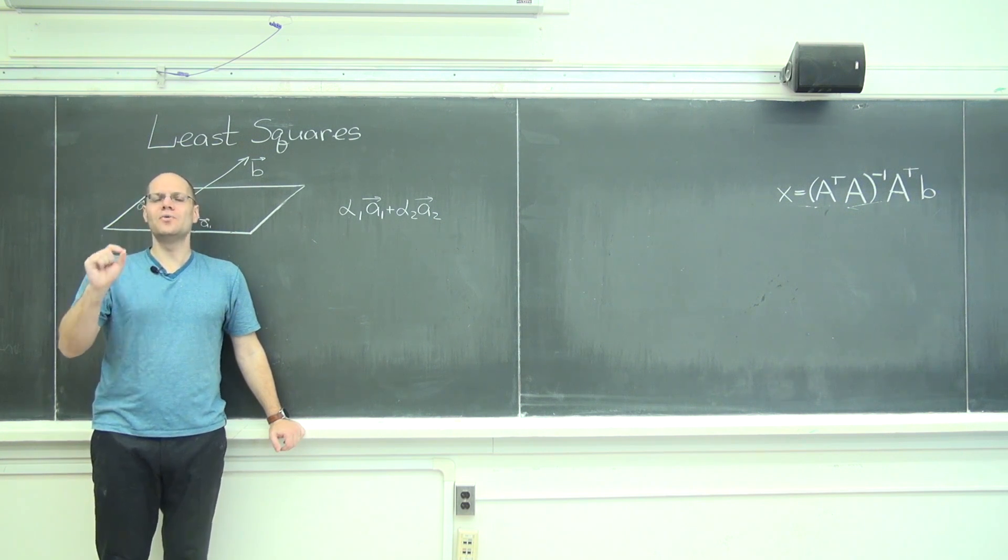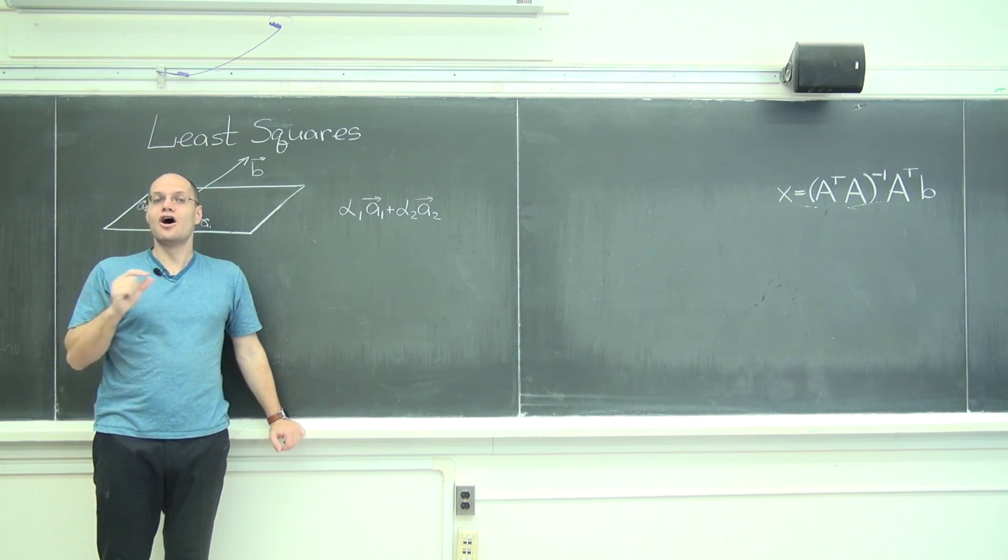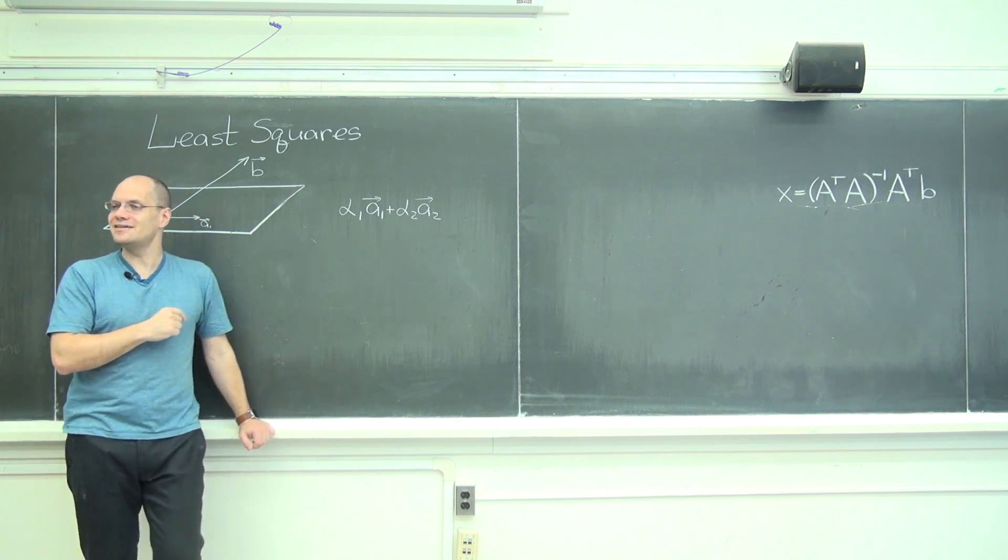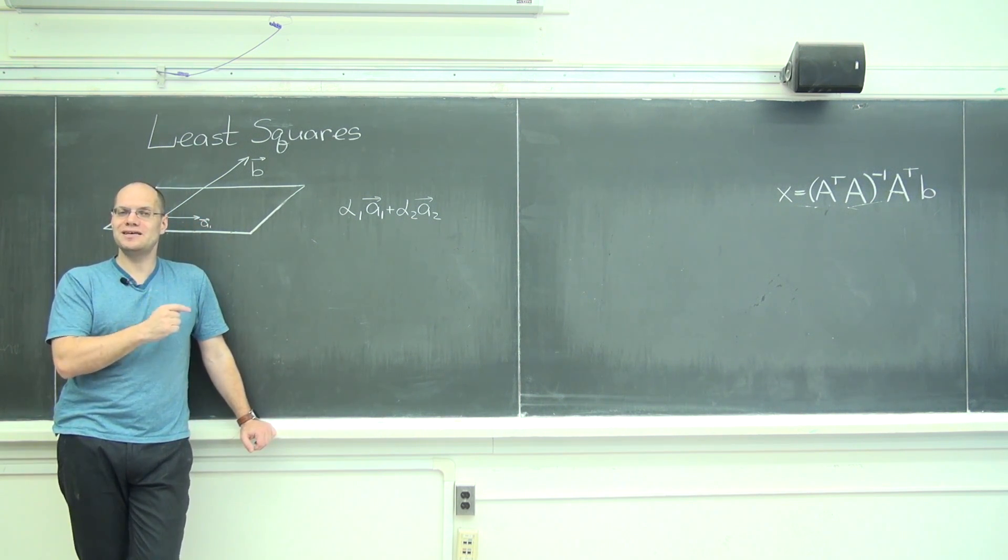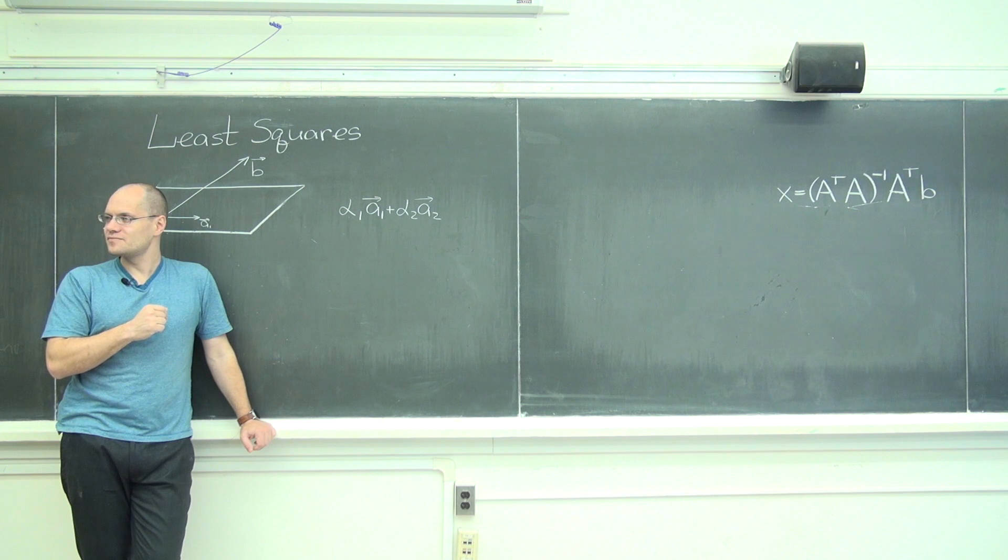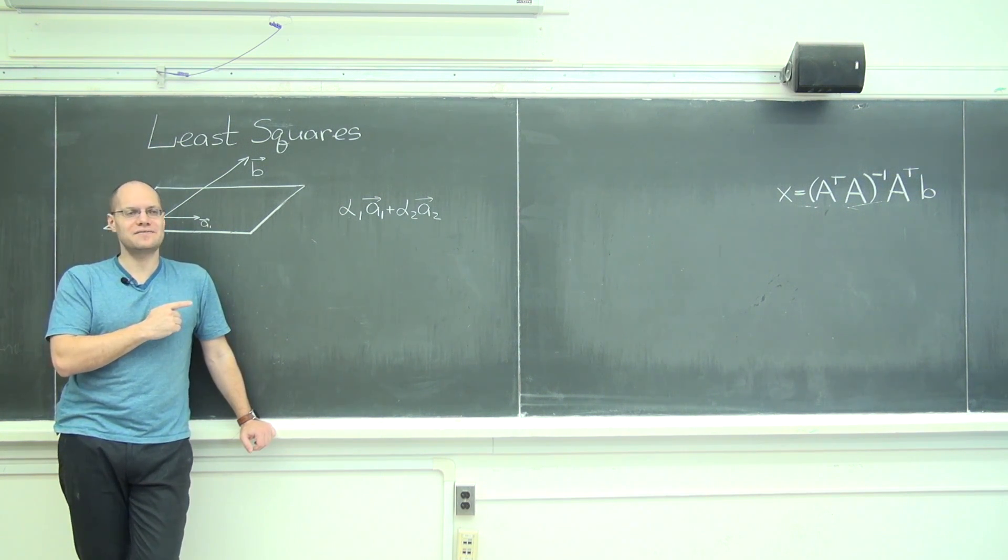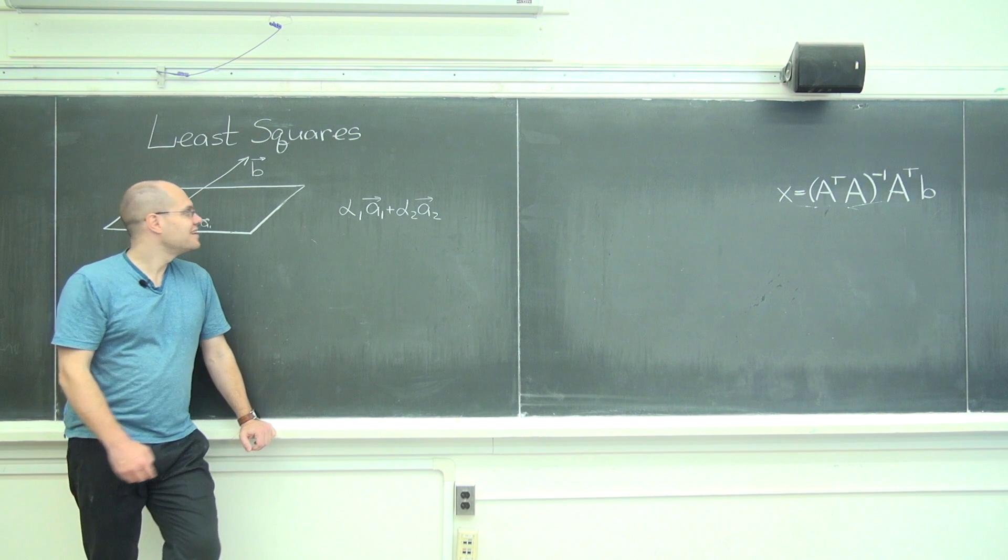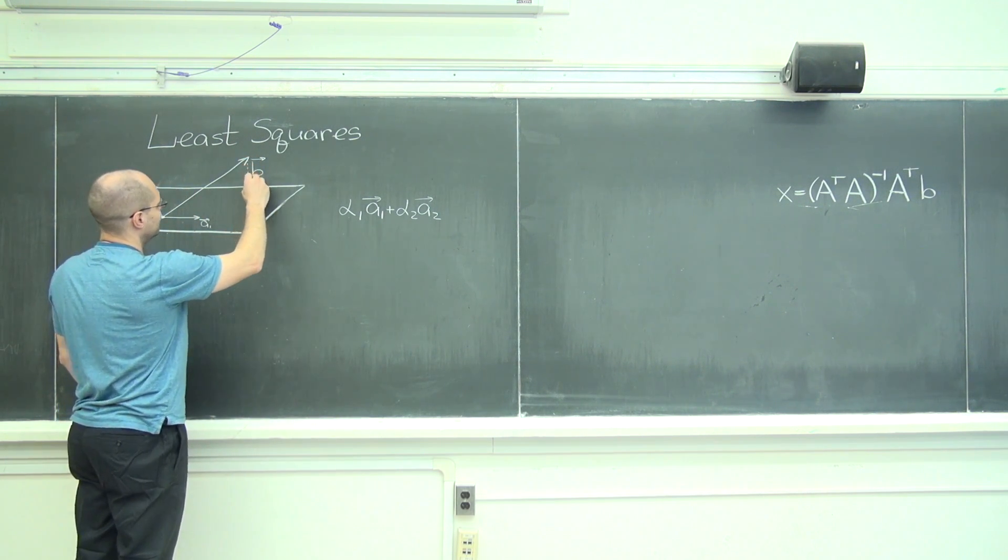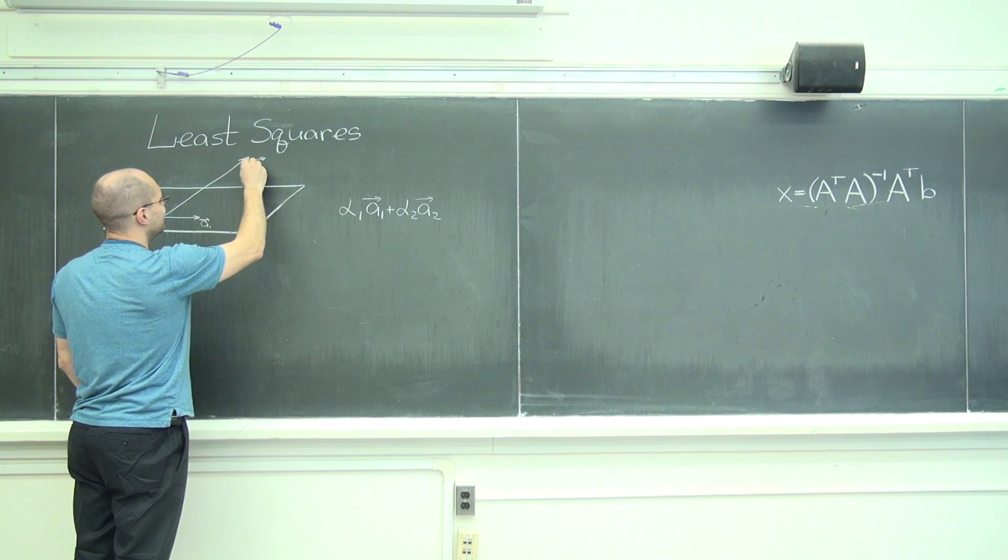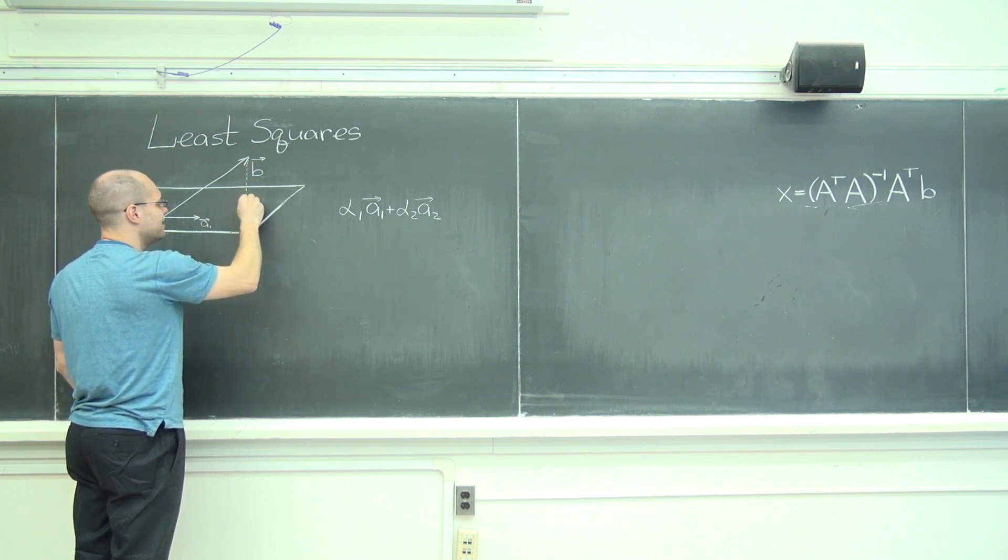So all we need to do is answer the question of which vector in the plane is as close to B as possible. Describe it geometrically. What is that vector? It's right here-ish, where this angle is the right angle.